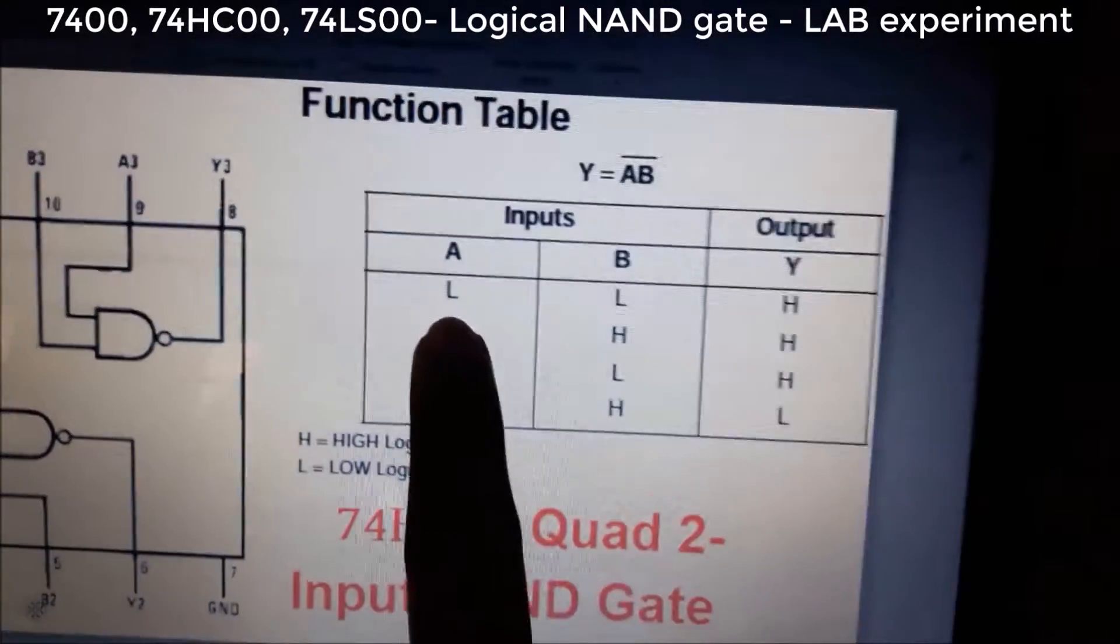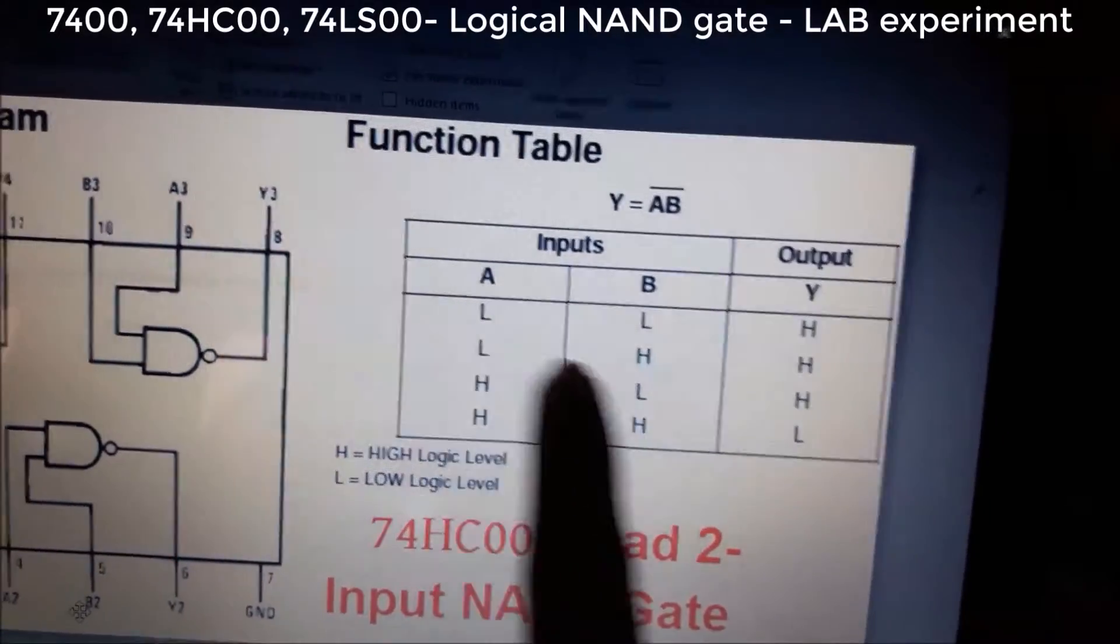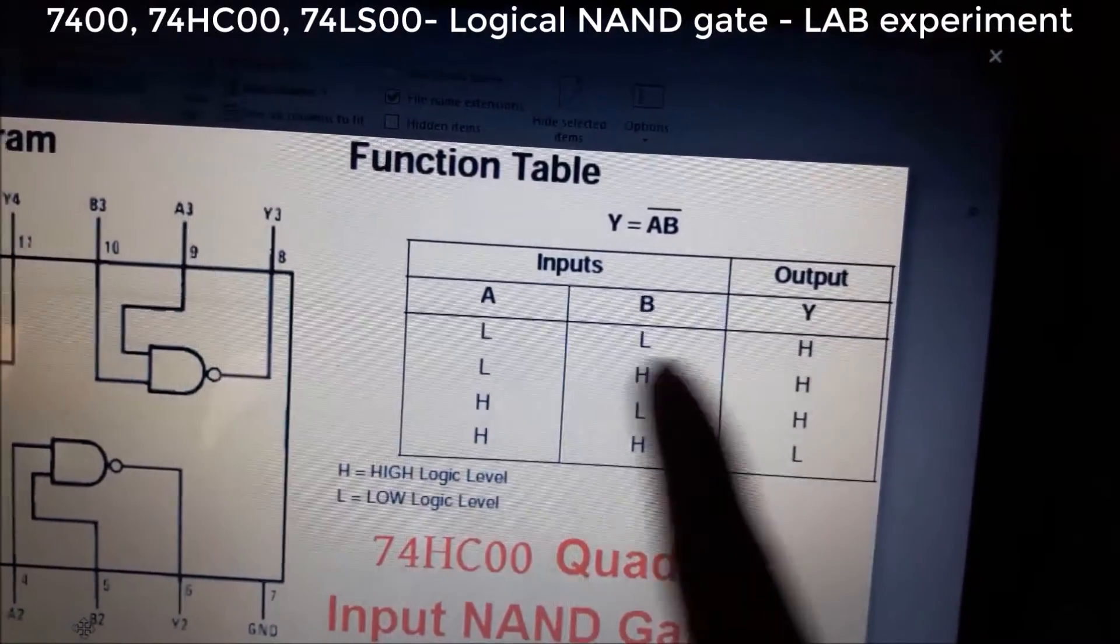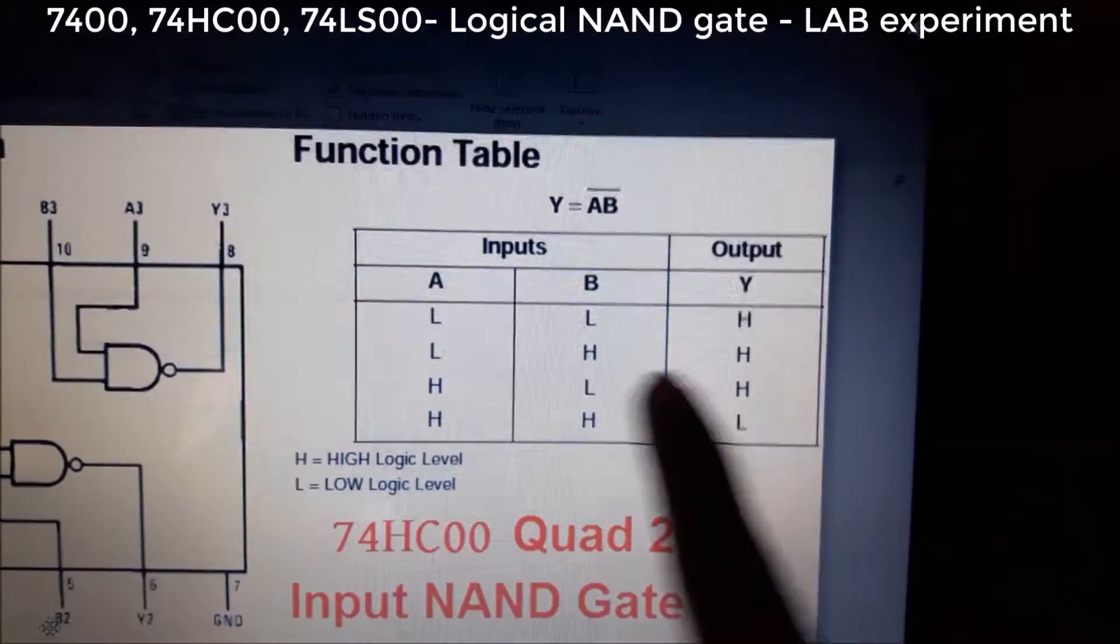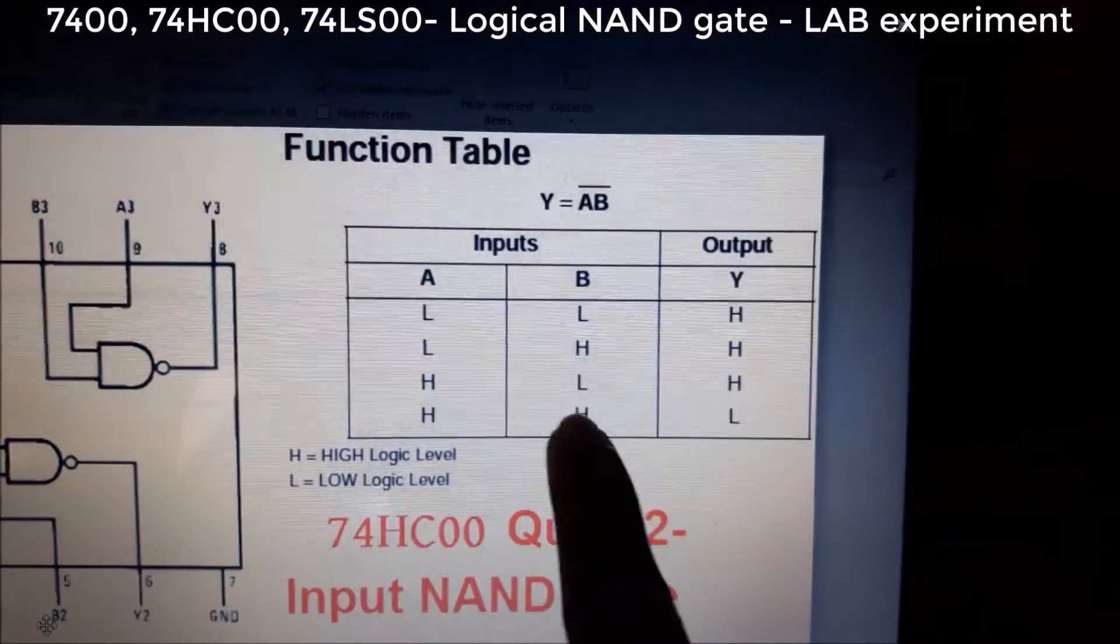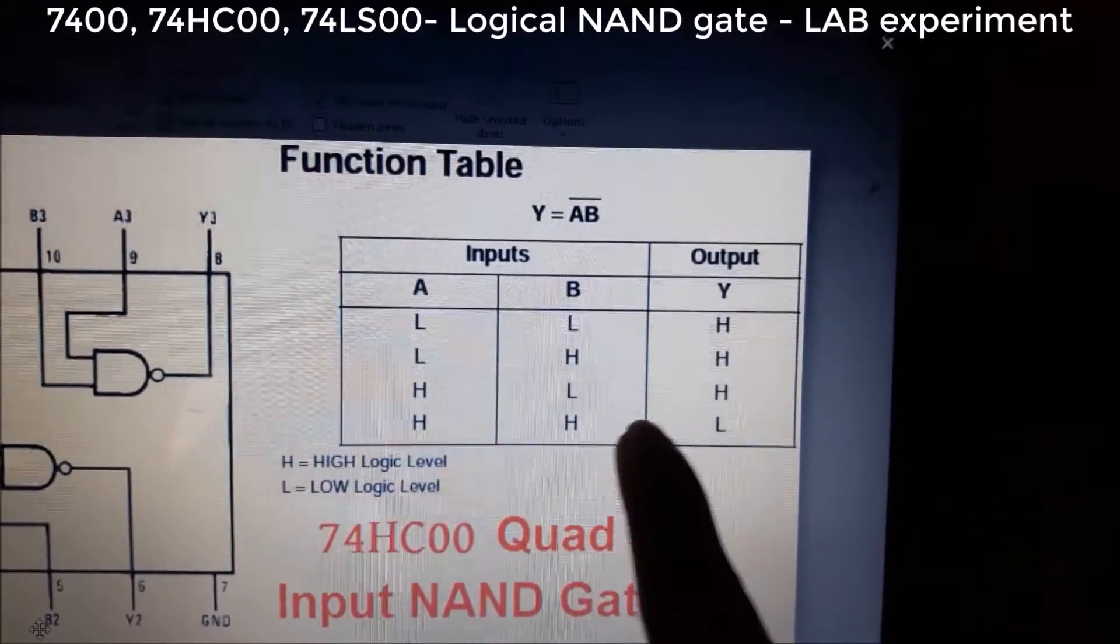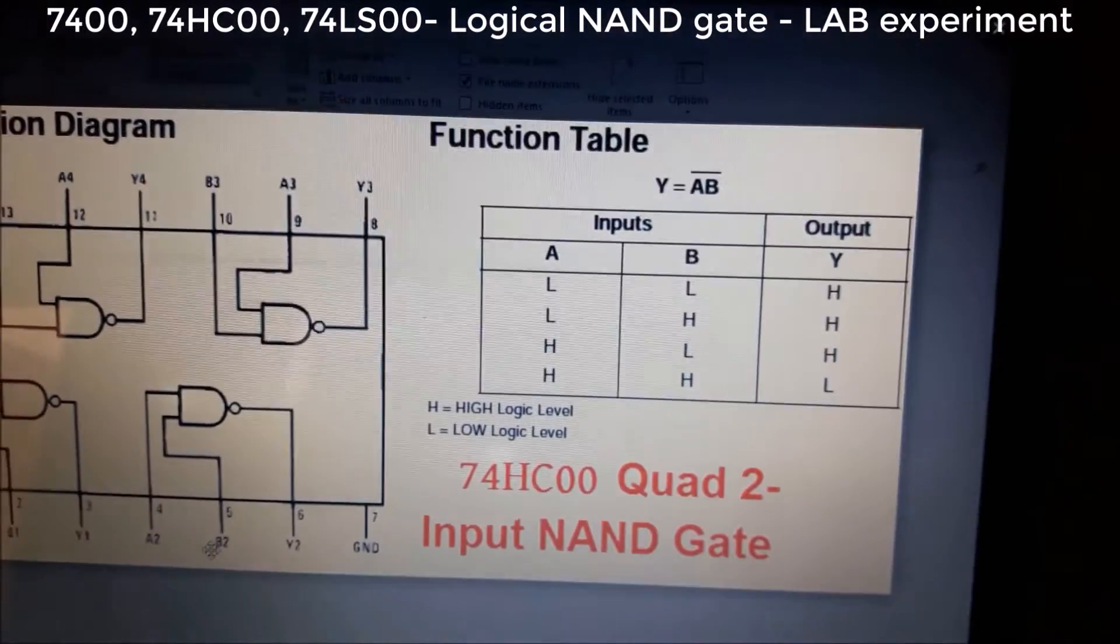That is like 0 and 0 equals 1, 0 and 1 equals 1, 1 and 0 also equals 1. Only when we give input as 1 and 1, then the output equals 0. Let's see the experiment.